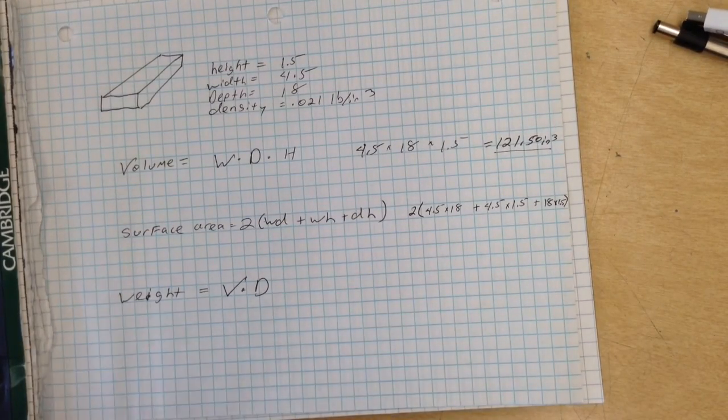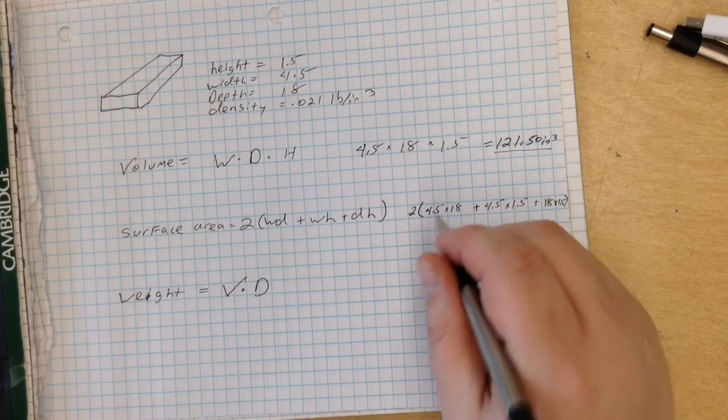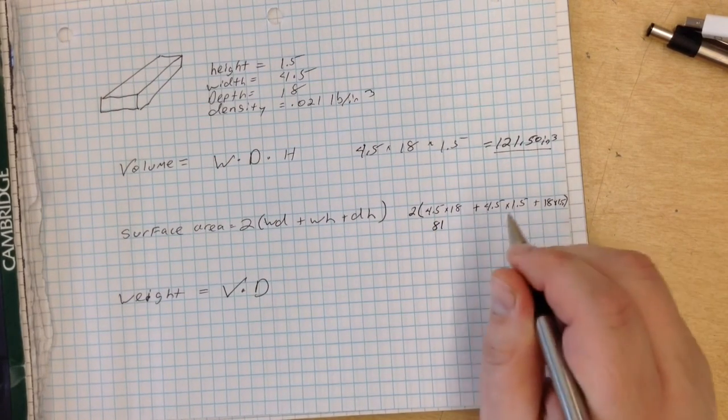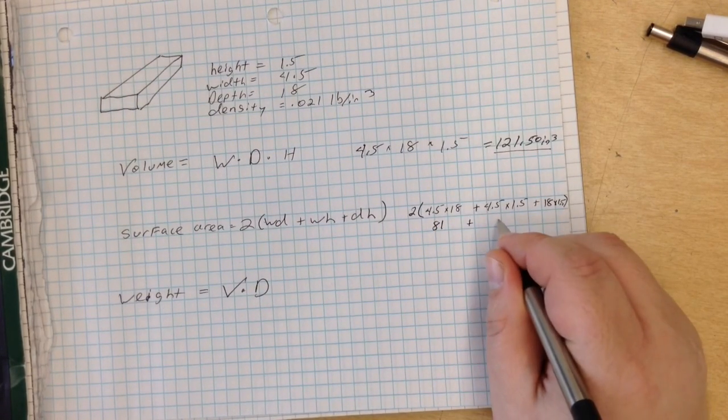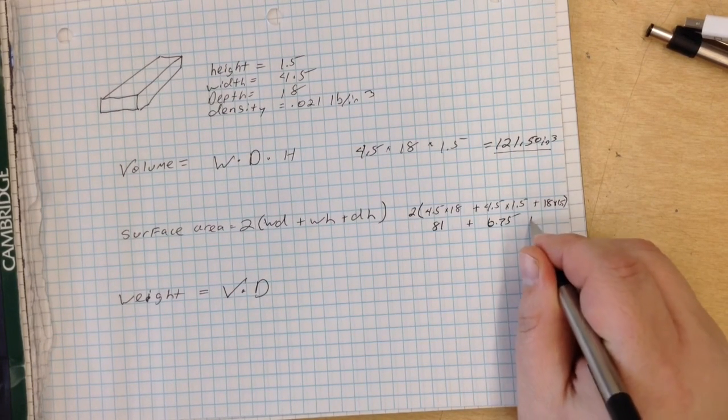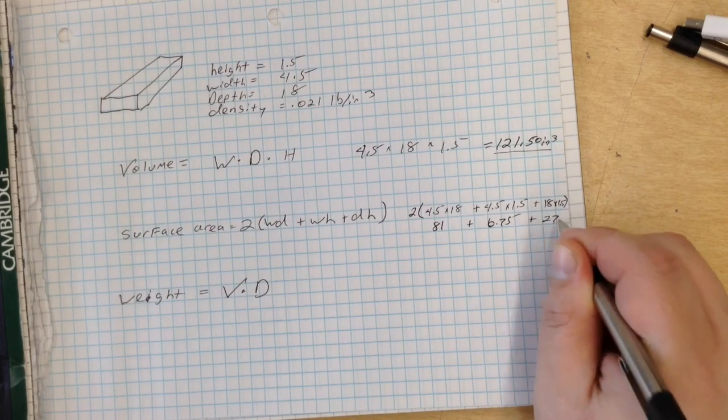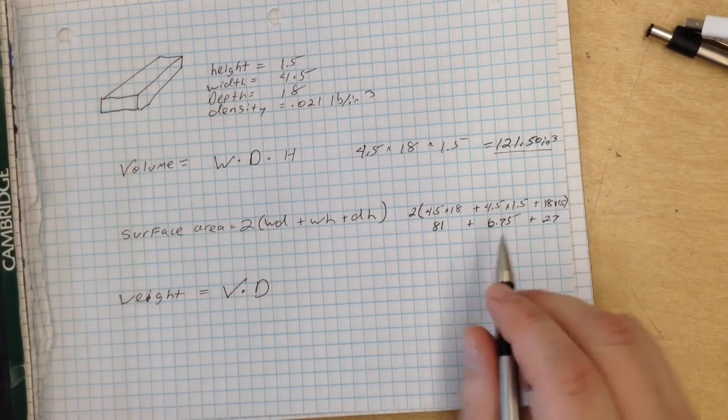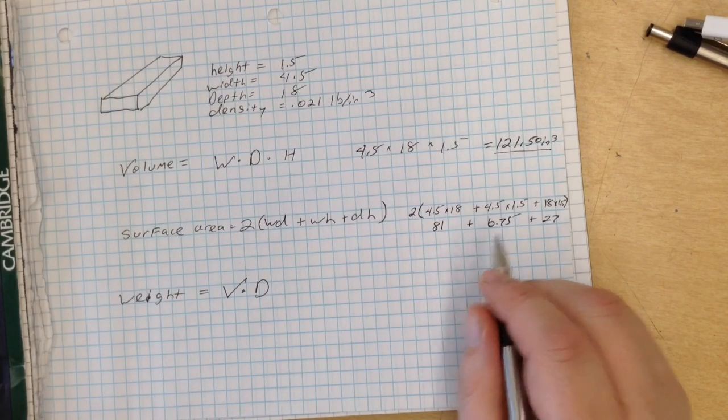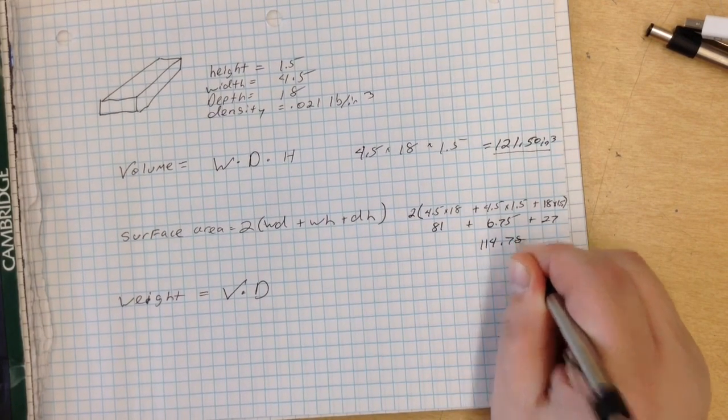Okay, let's get out the calculator right here so we can do this. 4.5 times 18 is 81, plus 4.5 times 1.5, that is 6.75, plus 18 times 1.5, that's 27 right there. Now we add those up, and we are given 114.75.